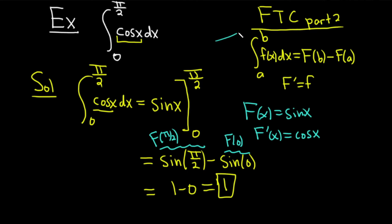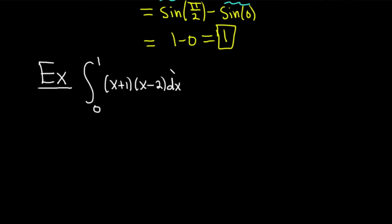It actually is FTC part 2. In this last example, we're going to do the same thing we just did, except it's a little bit more challenging. So we have to integrate (x+1)(x-2). And we're going from 0 to 1. So we don't really have a product rule for integrals. So what we're going to do here is just distribute.